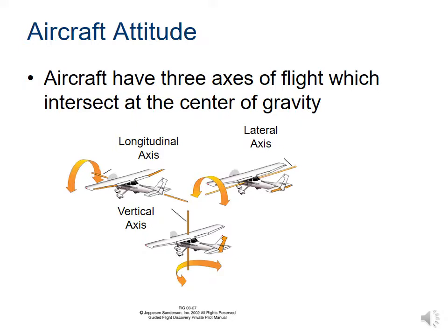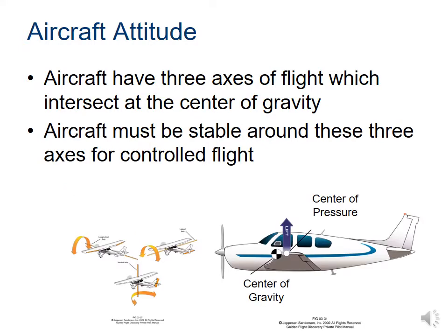Aircraft attitude doesn't have to do with what mood the plane is in — it's the position or movement of the plane: where is it going, what is it trying to do? That's based on three different axes that the plane can rotate around, based on the center of gravity. We have the longitudinal axis from nose to tail, the lateral axis from wingtip to wingtip, and the vertical axis acting up and down through the plane — all intersecting at the center of gravity.